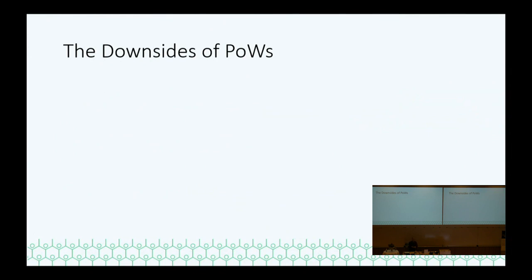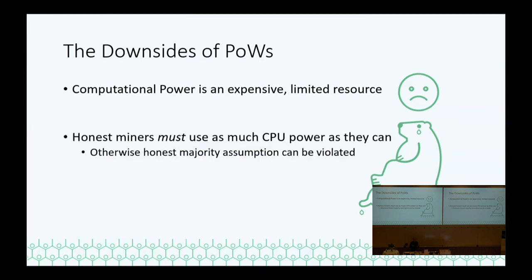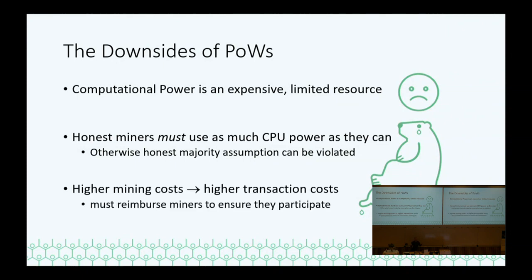What about proofs of work? Why are they problematic? Computational power is very expensive and limited. Limited is good because we're basing security on it, but computational power has huge environmental costs, so these systems are inherently environmentally unfriendly. We can't just get a more efficient proof of work because the whole point is everybody has to work as fast as they can, otherwise our honest majority assumption doesn't hold. This also causes higher mining costs because we have to reimburse miners for all these expenses. Proofs of work are bad, and I think by now almost everybody agrees.